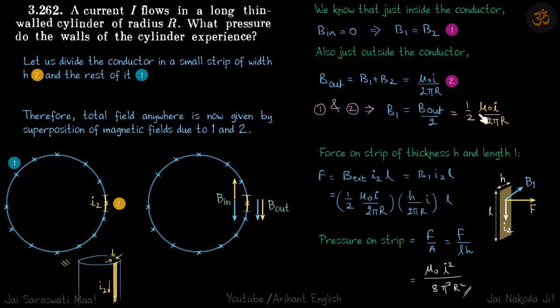Because of the strip it is half of it, which is the same as the field due to the rest of the conductor, which is the external field for this strip.